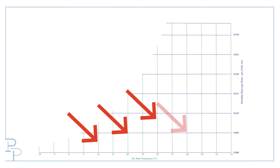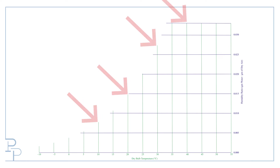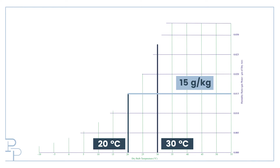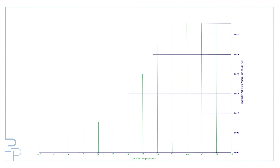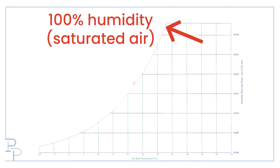You can see that the vertical temperature lines are different lengths, and that is because air can only hold so much water — the warmer the air, the more water it can hold. As an example, at 20 degrees Celsius a kilogram of air can hold about 15 grams of water, and at 30 degrees this capacity goes up to around 27 grams of water per kilogram of air. We can draw a line through all of these maximum water contents for each temperature and we get the line of 100% relative humidity, also known as the saturation curve.